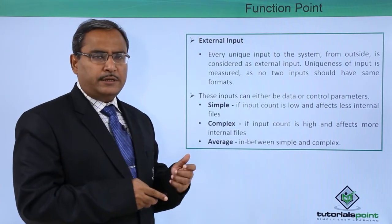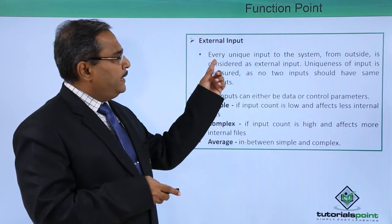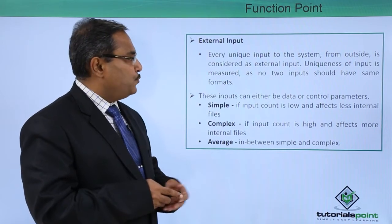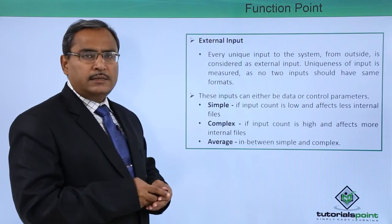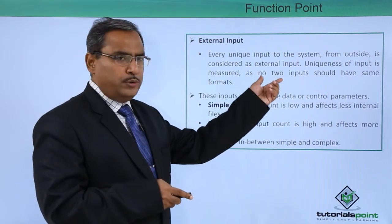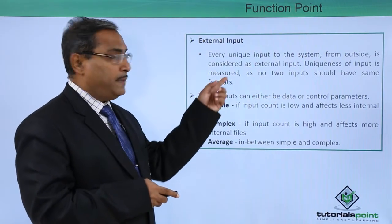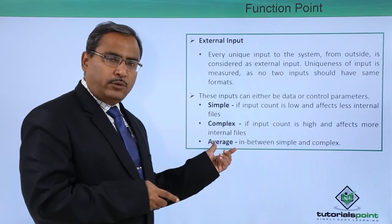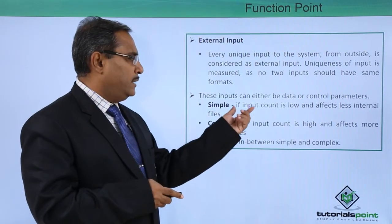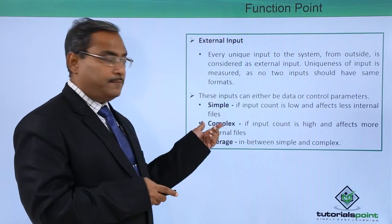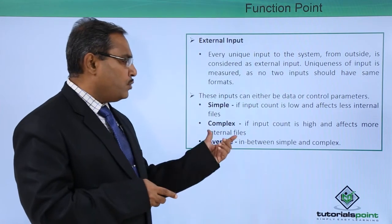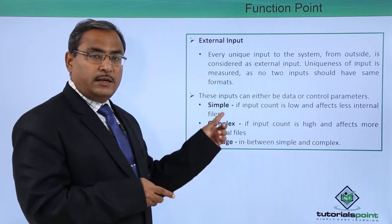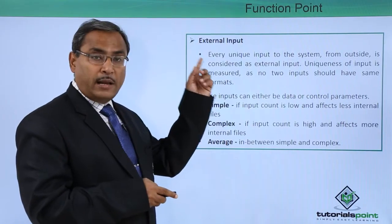The first parameter is external input. Every unique input to the system from the outside is considered as external input. Uniqueness of input is measured such that no two inputs should have the same formats. These inputs can be either data or control parameters. Simple means if the input count is low and affects fewer internal files. Complex means if the input count is high and affects more internal files. Average is in between simple and complex.